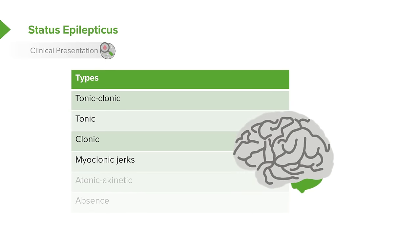Myoclonic jerks are a unique type of seizure that happens in children. They can happen up to a hundred times a day and involve a sudden jerking spasm of one arm or one extremity. Atonic-akinetic seizures are literally a drop spell where there is a complete loss of tone and patients collapse to the floor.